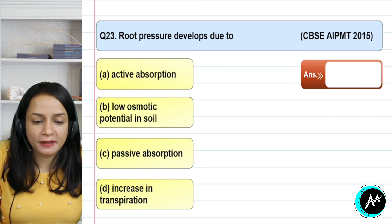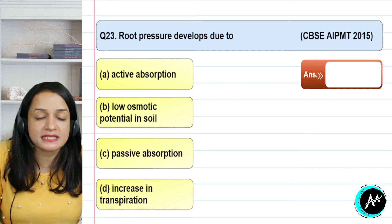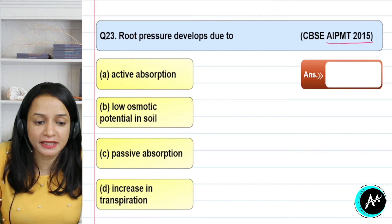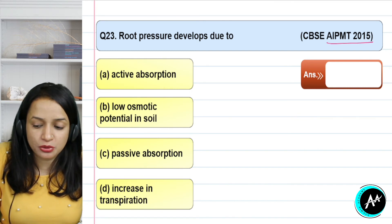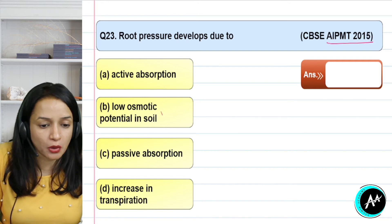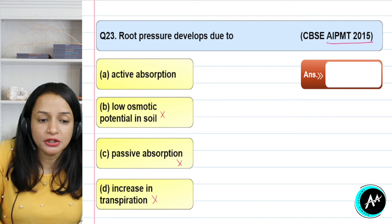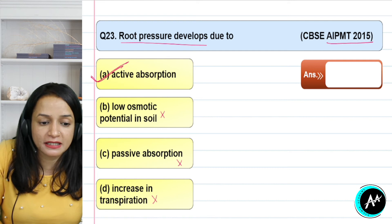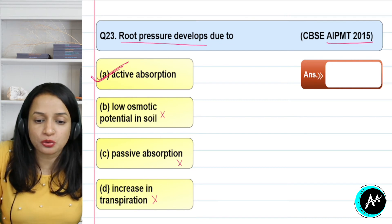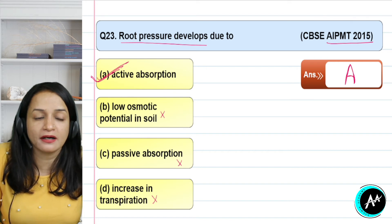Question 23 — repeated in 2015: root pressure develops due to what? Options include active absorption, low osmotic potential in soil, passive absorption, or increased transpiration. Low osmotic potential in soil is not possible; passive absorption is not the cause; increased transpiration is not the cause either. Root pressure builds up due to active absorption — energy is spent to actively absorb, creating the pressure build-up. The correct answer for question 23 is option A — active absorption.